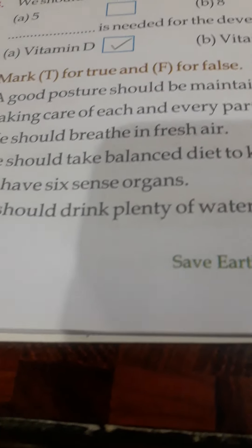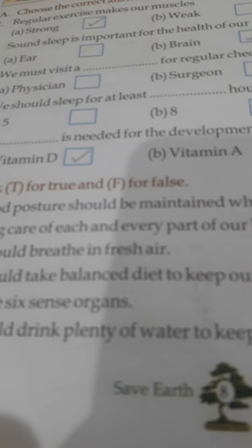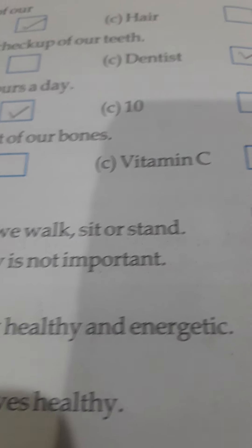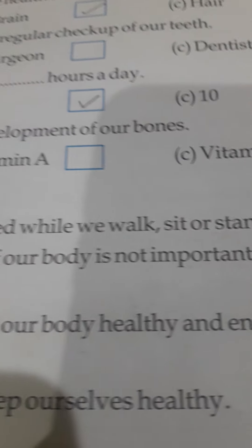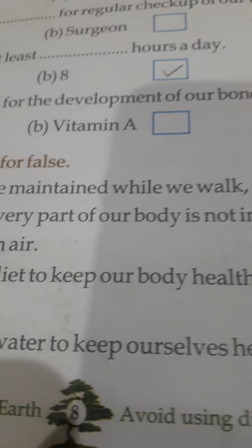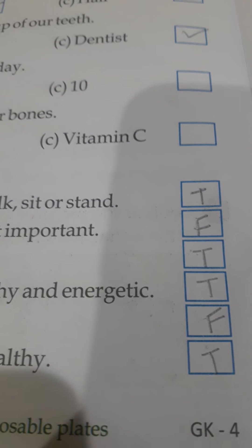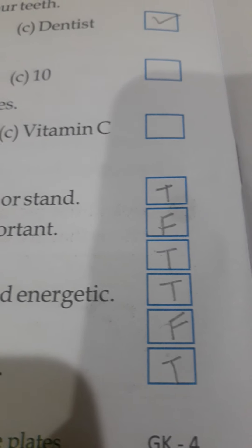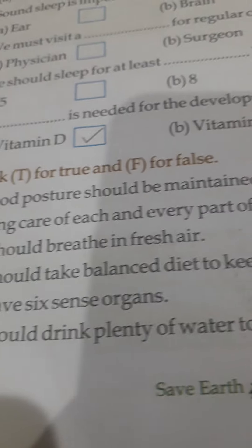Now we will do true and false. Students, you have to write either T for true or F for false. Number 1: A good posture should be maintained while we walk, sit or stand — True. Number 2: Taking care of each and every part of our body is not important — False. Number 3: We should breathe in fresh air — True. Number 4: We should take a balanced diet to keep our body healthy and energetic — True. Number 5: We have 6 sense organs — False. Number 6: We should drink plenty of water to keep ourselves healthy — True.